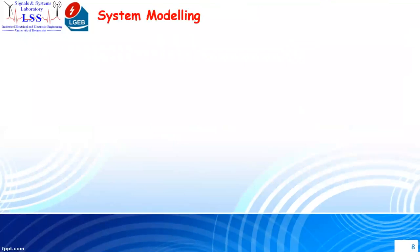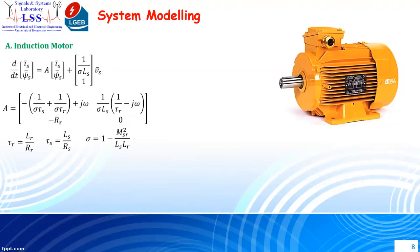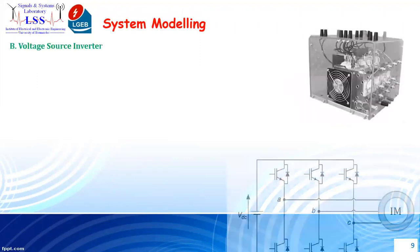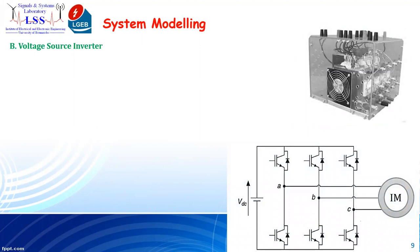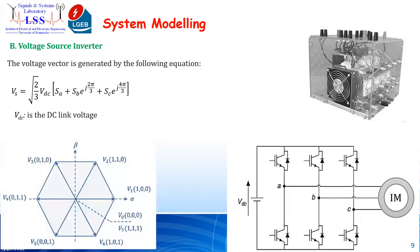Let's present the modeling of the system. The main element is the induction motor. Its mathematical model has been obtained after DQ transformation to simplify the system from three-phase to two-phase, presented in complex form. The second main element is the power converter: a two-level voltage source inverter with six IGBT switches. The voltage vector is given by a corresponding equation. This converter has eight possible switching states, two of which are non-active states: V0 and V7.